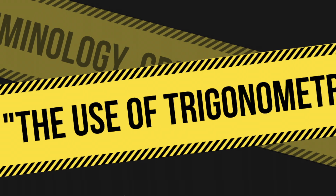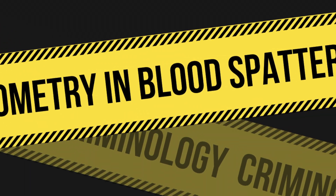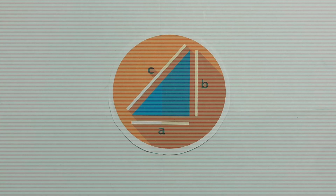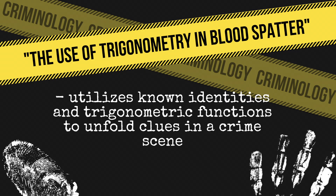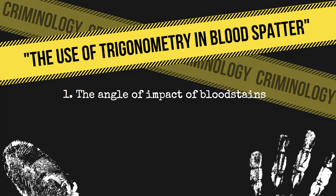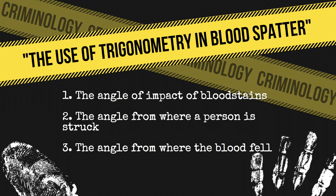In the abstract of the article, 'The Use of Trigonometry in Blood Spatter,' the author mentioned that trigonometry holds a special place in the hearts of blood spatter analysts because they work hard to utilize known identities and trigonometric functions to unfold clues present in a crime scene, such as the angle of impact of a blood stain, the angle from where a person is struck, and the angle from where the blood fell.